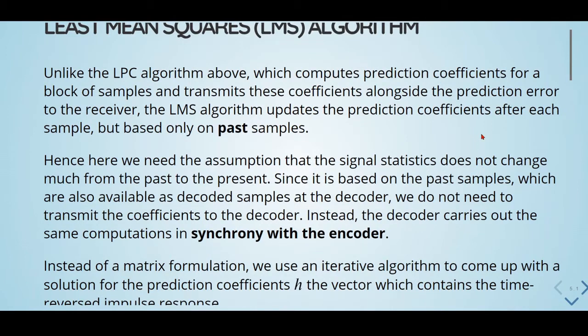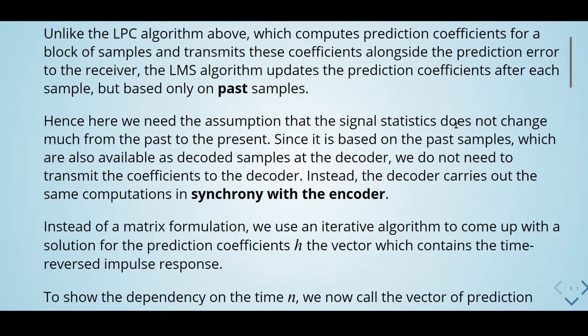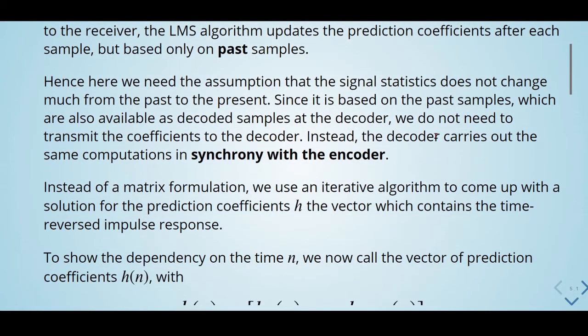Here we need the assumption that the signal statistics does not change much from the past to the present. Since it is based on past samples, which are also available as decoded samples at the decoder, we do not need to transmit the coefficients to the decoder. Instead, the decoder carries out the same computations in synchrony with the encoder.